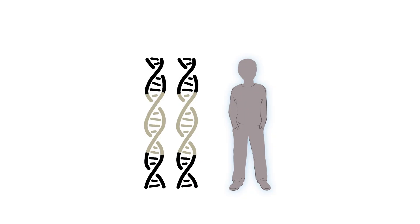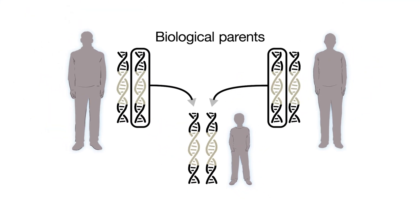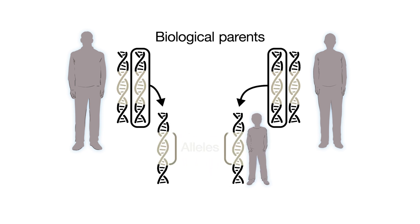Allison wanted to measure the frequencies of the sickle cell allele. He knew that we inherit two copies of most of our genes — one from each of our biological parents. These copies, called alleles, can be the same or different.